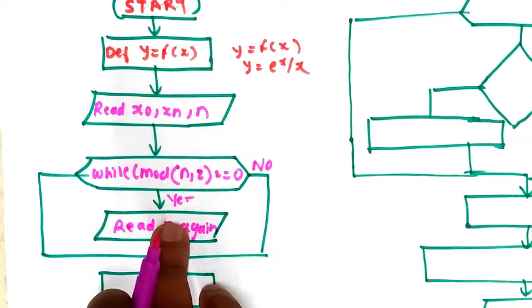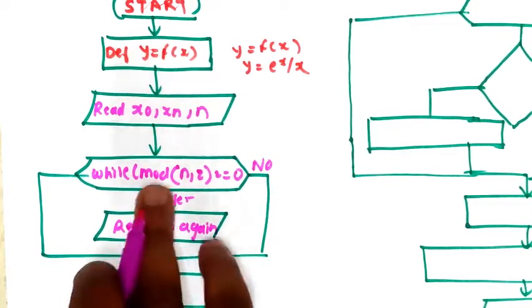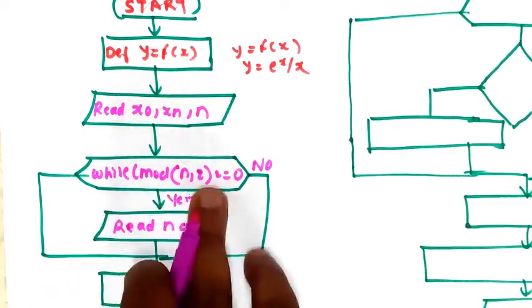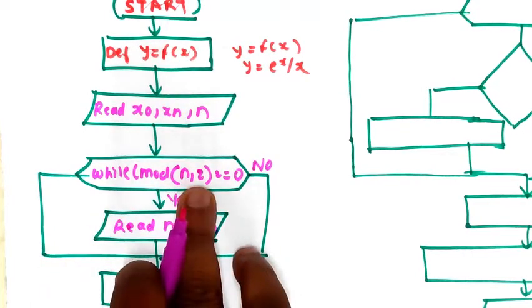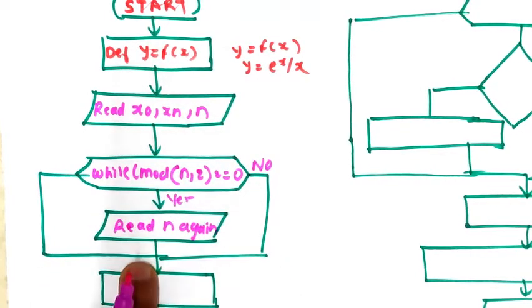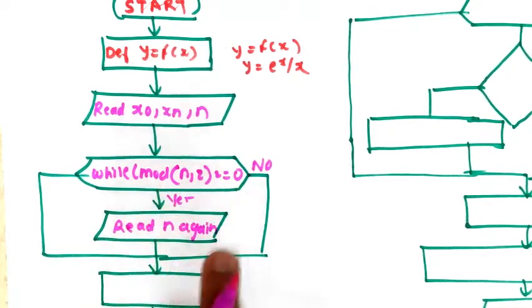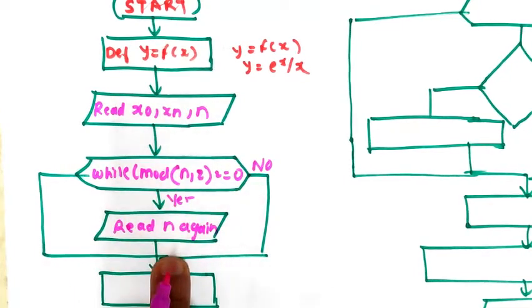If n is not a multiple of 2, then you have to enter a new value. If it is not a multiple of 2, you go back and enter a new value of n. It should be a multiple of 2.